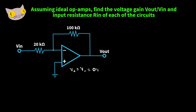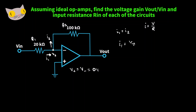We'll apply Kirchhoff's current law at this node, which we'll call V2. Going into this node is current I1, and coming out of the node is current I2. We'll call the 20k ohm resistor R1 and the 100k ohm resistor R2. I1 is equal to I2, and since current equals voltage over resistance, we can write I1 as V_input minus V2 over R1.